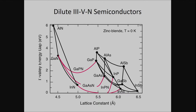It turns out we found something called a dilute nitride material, which is shown as those red lines on the chart. Charles and I both worked on this material, so I know something in detail and I know his important contribution.